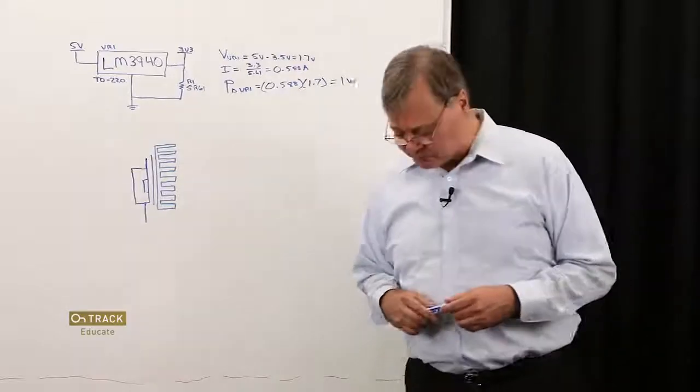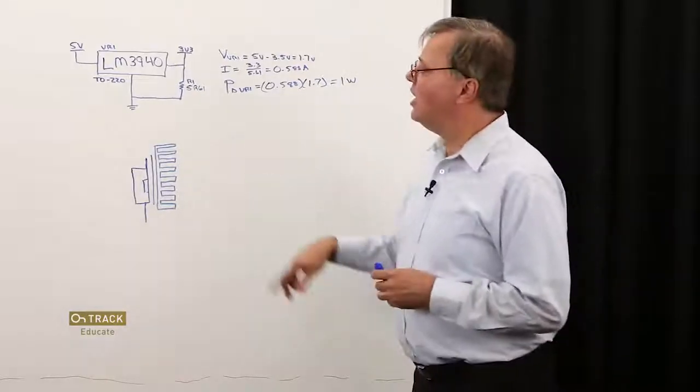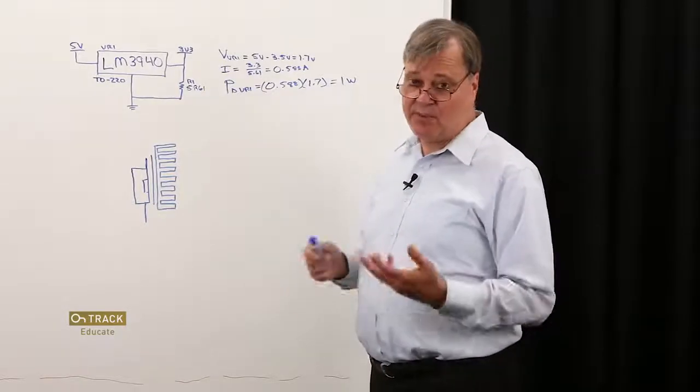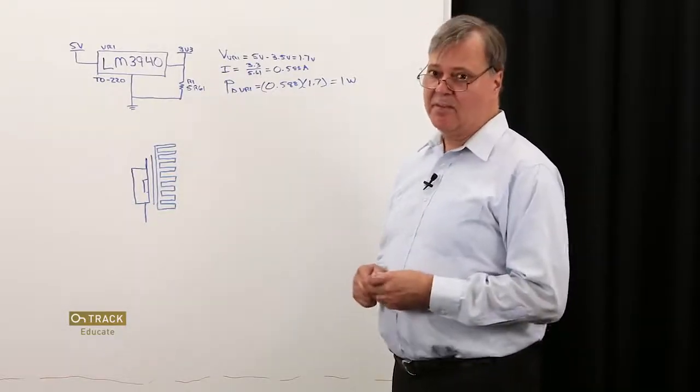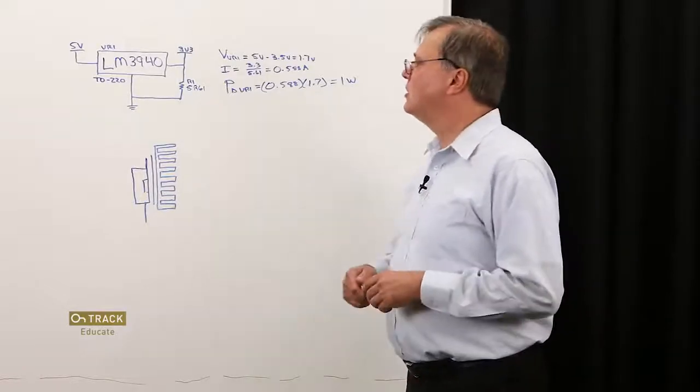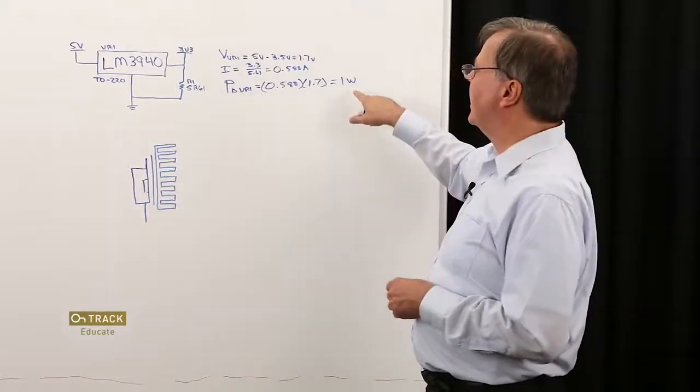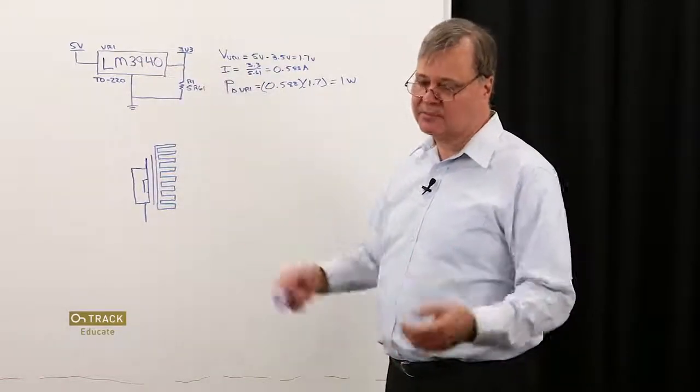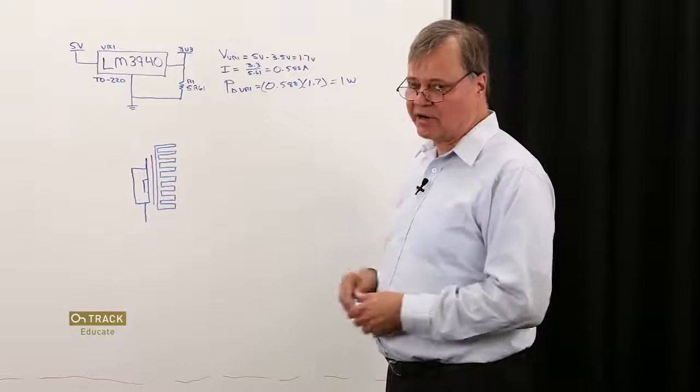In our example, I've got a simple little voltage regulator, an LM3940. It's a 3.3 volt regulator being sourced by 5 volts. I cleverly chose a load resistor to give us a power dissipation in our regulator of 1 watt, just to make the numbers simple in our example.